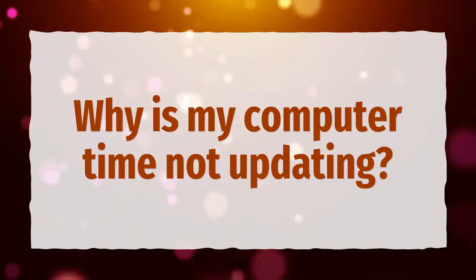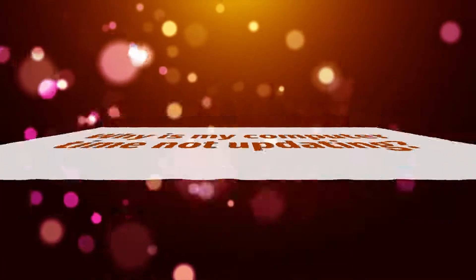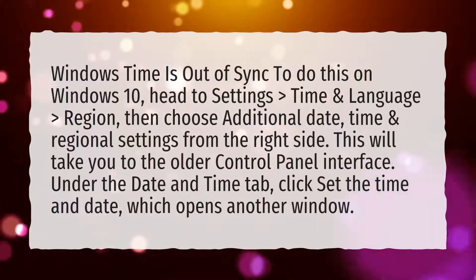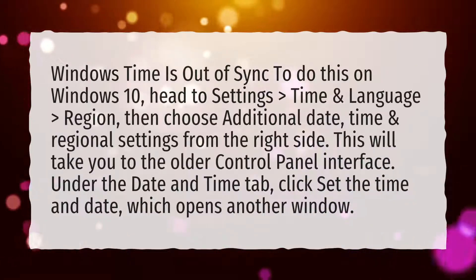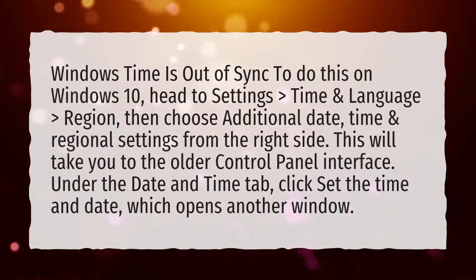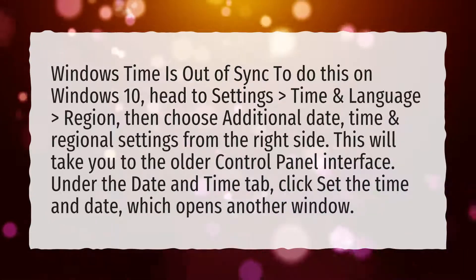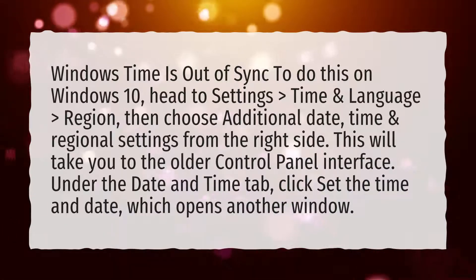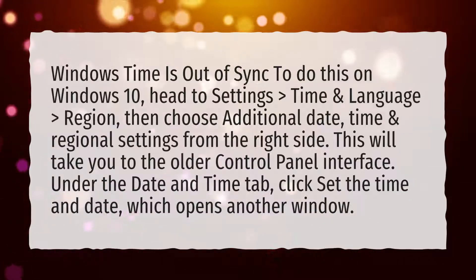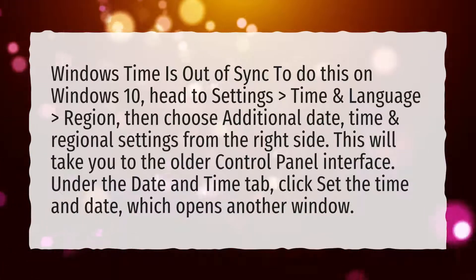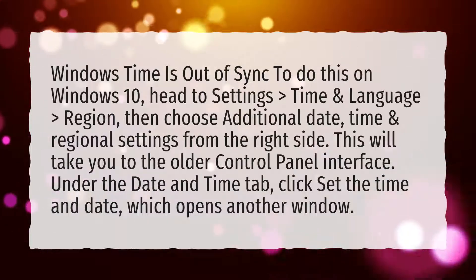Why is my computer time not updating? Windows time is out of sync. To do this on Windows 10, head to Settings, Time and Language region, then choose Additional Date, Time and Regional settings from the right side. This will take you to the older control panel interface. Under the Date and Time tab, click Set the Time and Date, which opens another window.